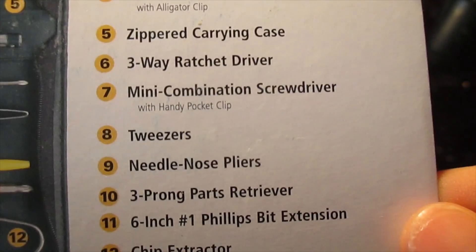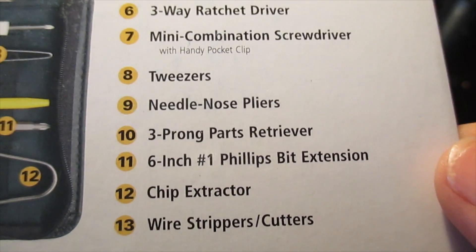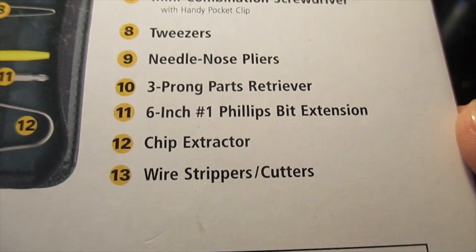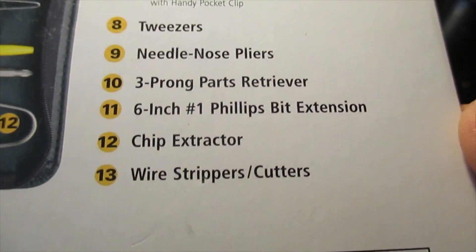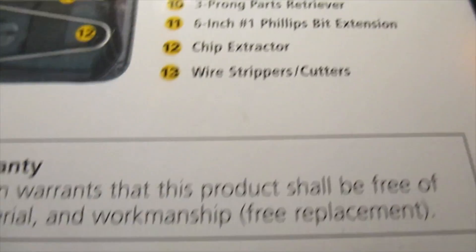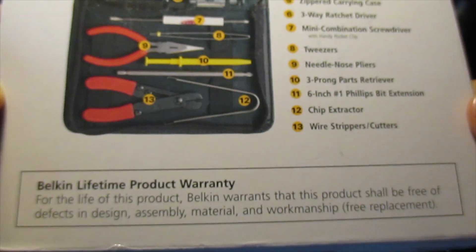3-way ratchet driver, mini combination screwdriver with pocket clip, tweezers, needle nose pliers, 3 prong parts retriever, 6 inch number one Philips bit extension, chip extractor which isn't used that often, wire strippers and cutters. And it does have a lifetime warranty, any defects you get for your replacement.